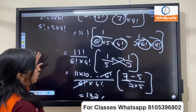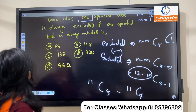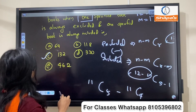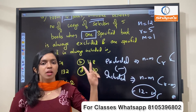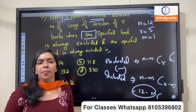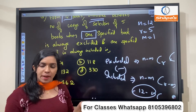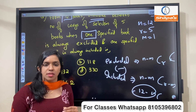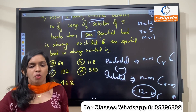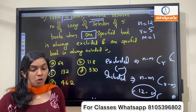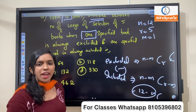The answer is 132. So option C is correct. We have excluded and included covered in permutation combination. Check the entrance crash course playlist — permutation combination full video uploaded. Okay, section uploaded. Thank you all, bye.